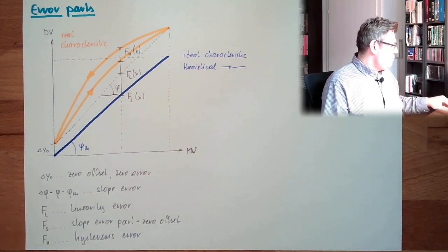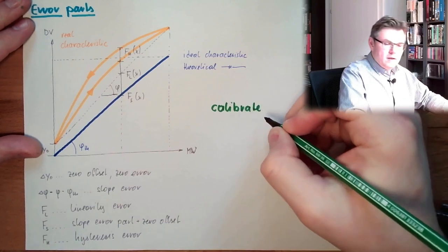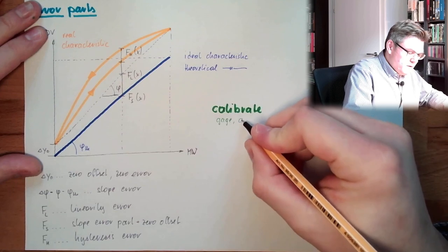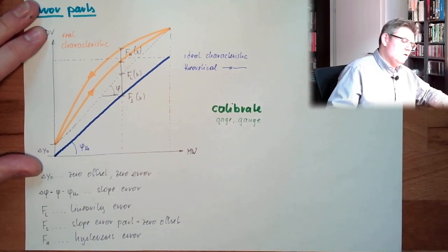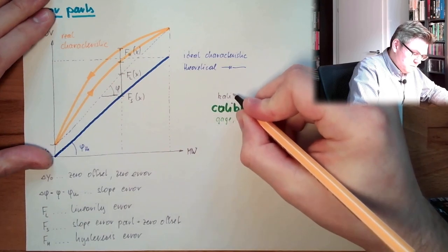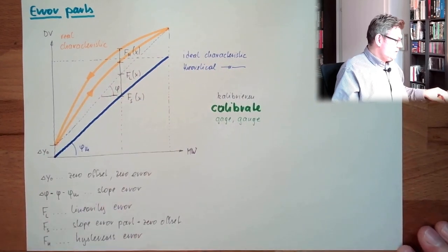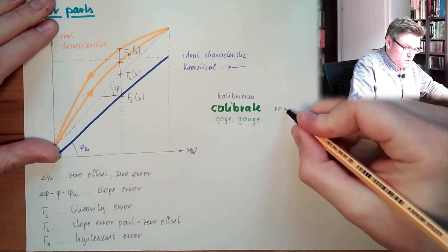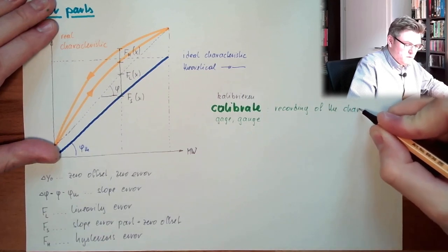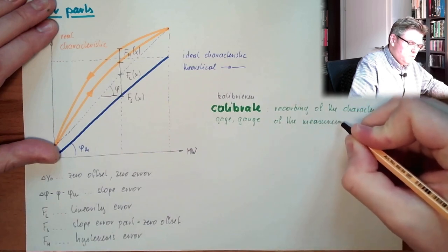Calibrate, or sometimes also called gauge, in Britain gauge. In German this would be calibrieren. That's the recording of exactly this real characteristic, this is the recording of the characteristic of the measurement system.